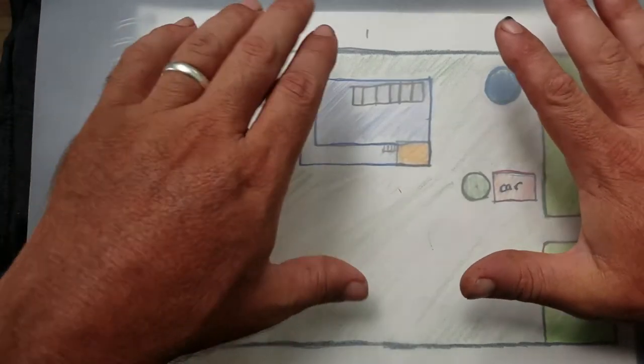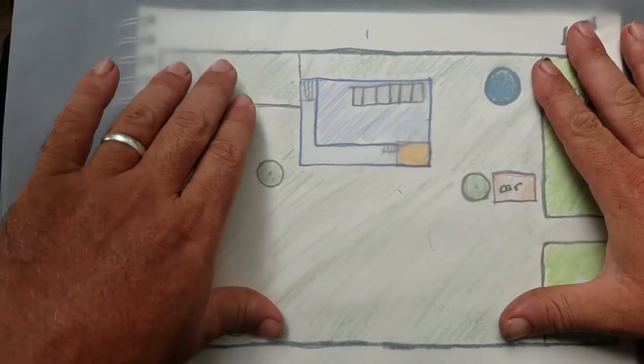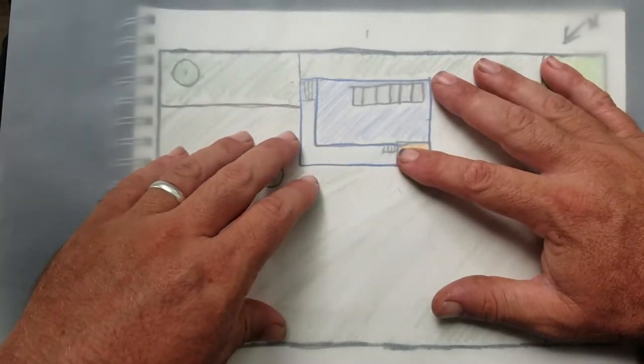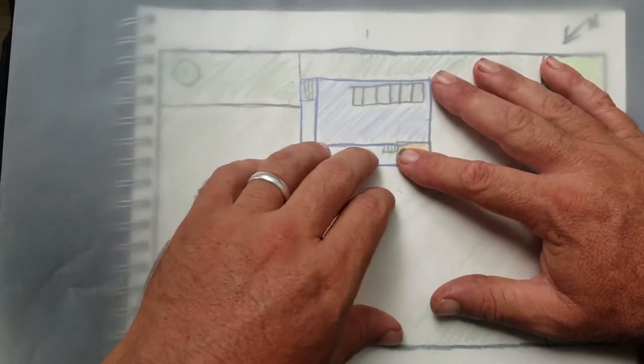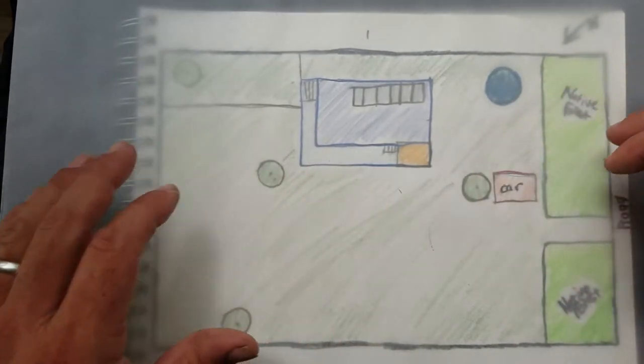In order to get zones there has to be a bit of observation that takes place. You need to observe how your site is used. This is going to be a little bit easier if you're already living in the space. You'll have an idea of where your energies go.